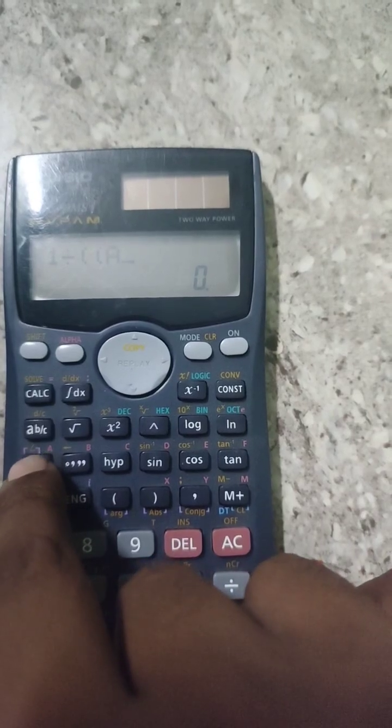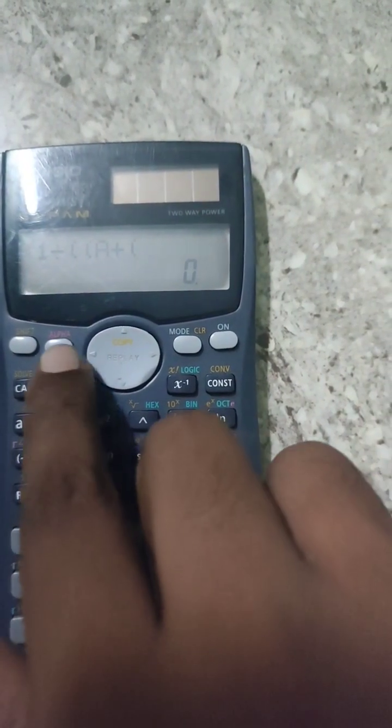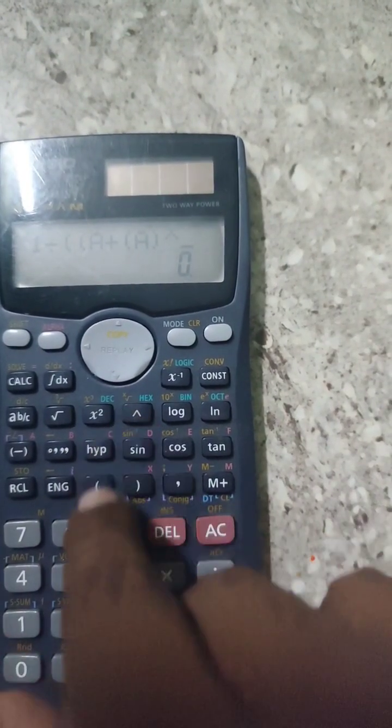Then press alpha constant here, the value as a. Plus open braces and closed braces. Inside that one you have to write a power 3. And closed braces.